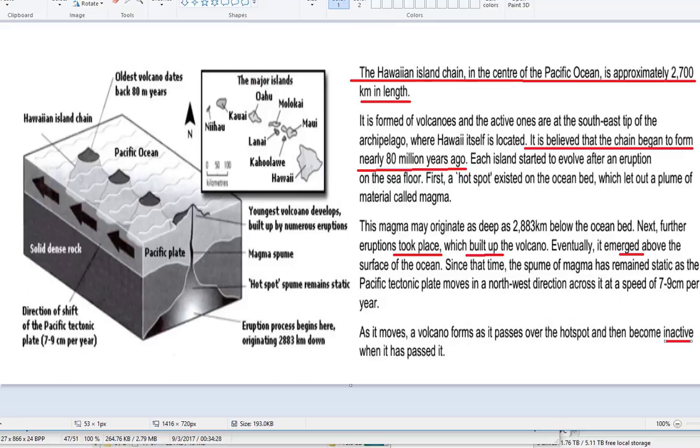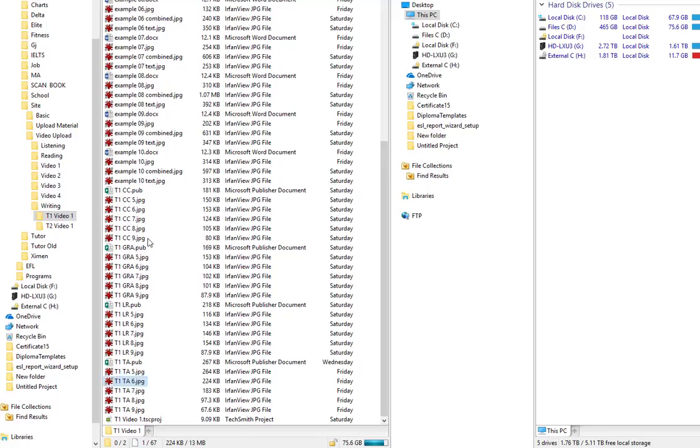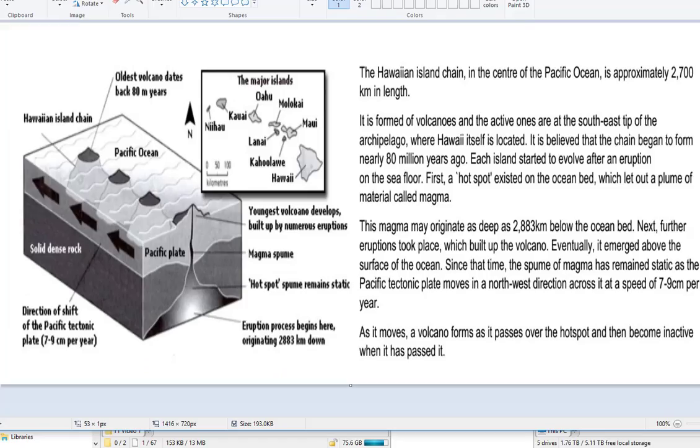Let's go on to look at the next criteria. Let's see if they can get a 6 for coherence and cohesion. So, there's some referencing there to the island chain. To form the volcanoes. Active ones. So the ones referring back to volcanoes. That's good. Each eruption, back to an eruption. First. So I have some sequencers here. This magma, because magma was already mentioned there. Next, further eruptions. So we see a process. First, next, eventually. Since that time.